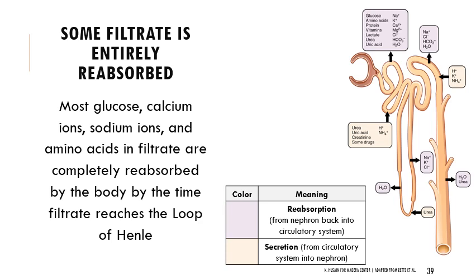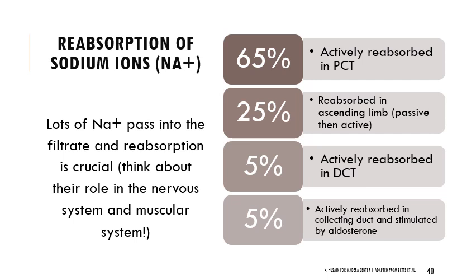We take back things we need like glucose, amino acids, proteins, vitamins, lactate, some urea and uric acid, many ions, and especially water. Sodium ion is especially important — recall from the nervous and muscular systems that sodium plays a crucial role in maintaining membrane potential and electrochemical signaling. Sodium easily passes through filtration units into filtrate, so we must reabsorb a lot of it. The bulk of sodium reabsorption happens actively in the proximal convoluted tubule, with additional reabsorption in the ascending limb (first passively, then actively), the DCT, and collecting duct.